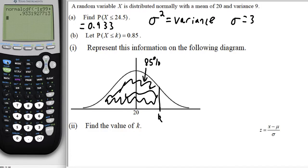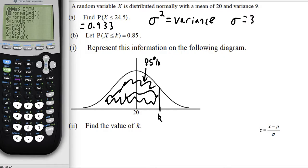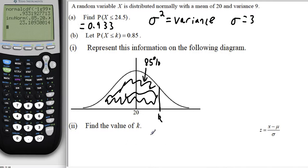So we want inverse norm. And the area below K is 0.85. We know that the mean is 20 and the standard deviation is 3. So we put that in and we get a value for K equals 23.1 to three significant figures. And so that's fairly straightforward.